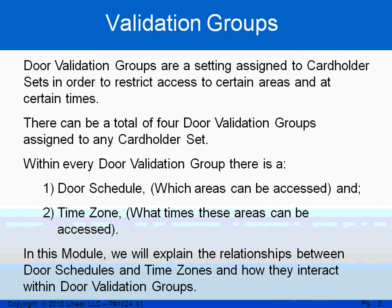A validation group is a setting assigned to a cardholder set. Consider a validation group as an access level. A validation group will dictate which doors a person can get into, what times and what days they can get into those doors. Within every validation group, we have two things: a door schedule, which doors we can get into, and a time zone, what time and days we can get in those doors.